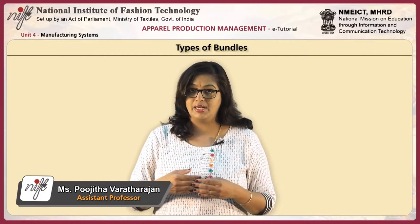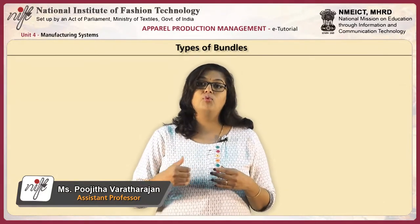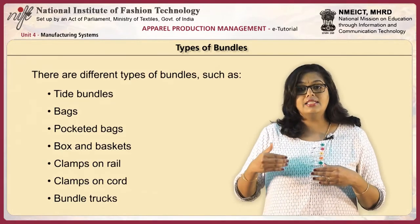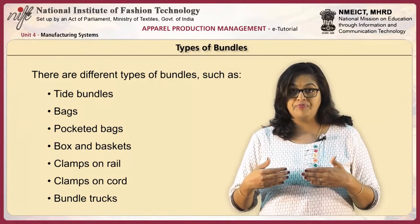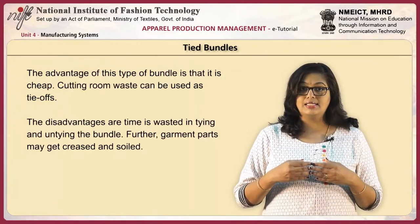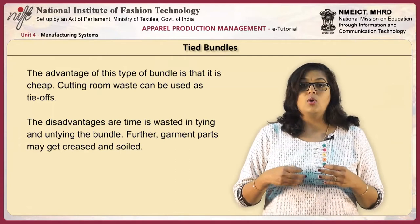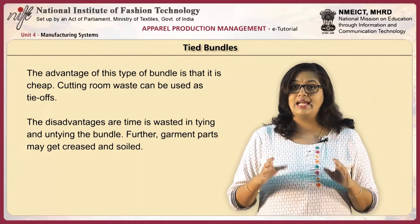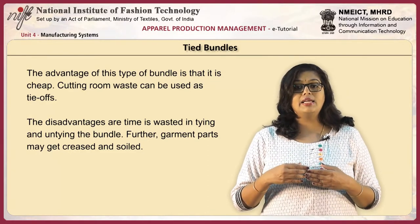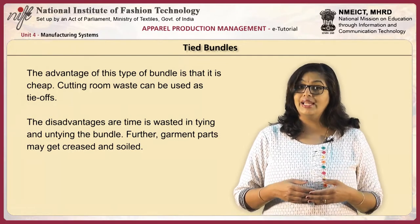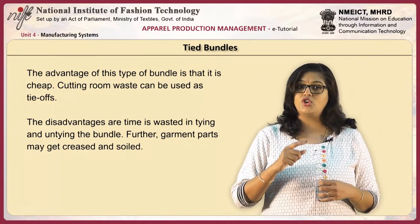Let's start with the types of bundles. There are varying different types of bundle categorization in which the cut pieces of garments move on the sewing floor. In this unit we would be discussing about how the pieces are moved, in what form and in what way, inside the sewing section. The first type of bundle movement would be tied bundles. Here the bundles are tied. The advantage of this type is that it is cheap — cutting room waste can be used as tie-offs. The disadvantages, however, are time wasted in tying and untying of the bundle, and garment parts may get creased or soiled.